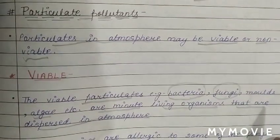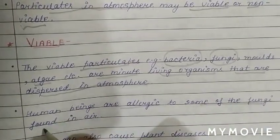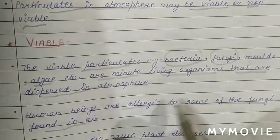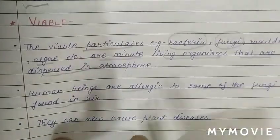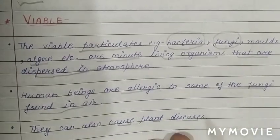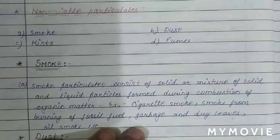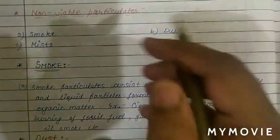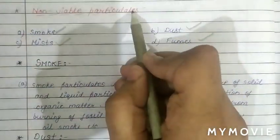Viable particulates like bacteria, fungi, and algae are minute living organisms dispersed in the atmosphere. Human beings are allergic to some fungi in the air, and they can also cause plant disease.